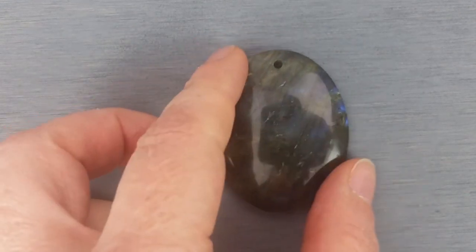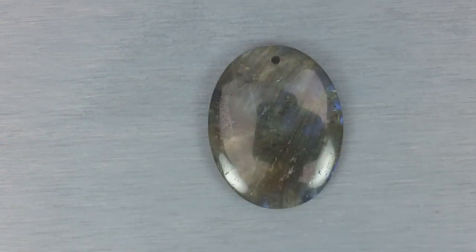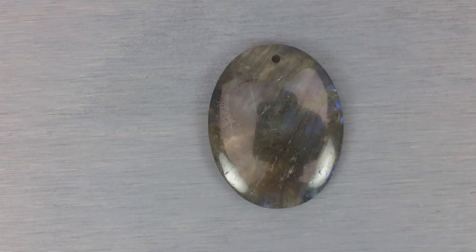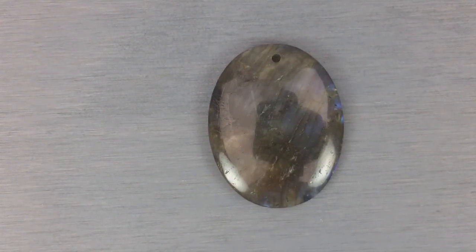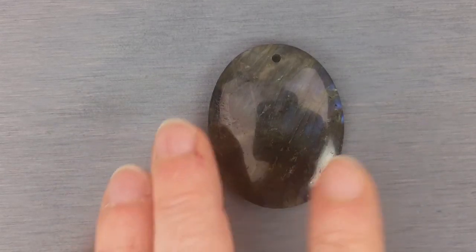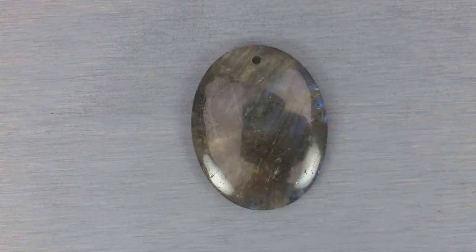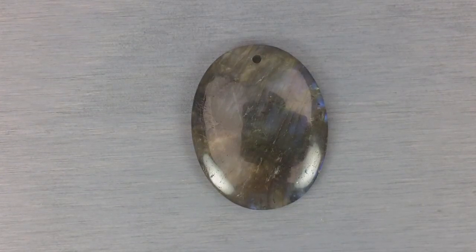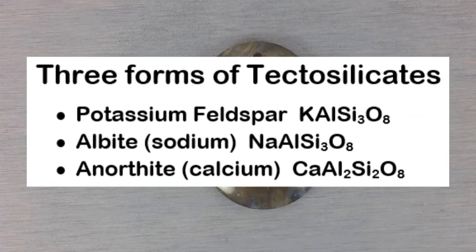Labradorite itself is a member of the feldspar mineral family, which makes up about 41% of the earth's continental crust by weight. Feldspars are what's known as tectosilicate materials. Tectosilicate materials come in three different forms: there's potassium feldspar, albite which has sodium, and anorthite which has calcium.